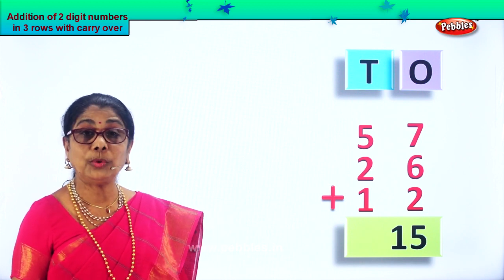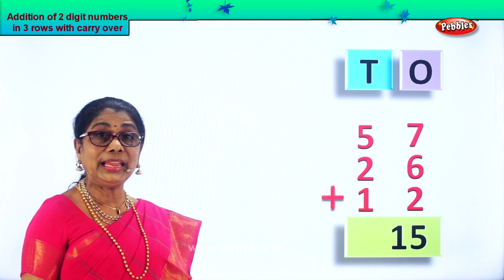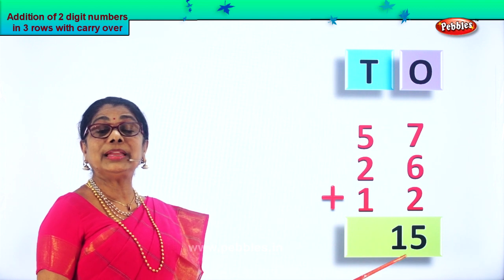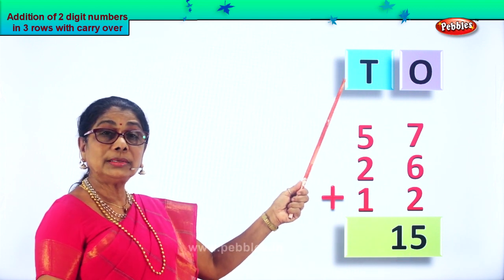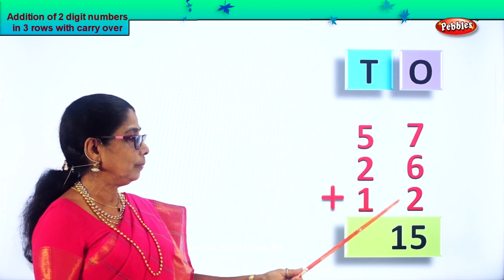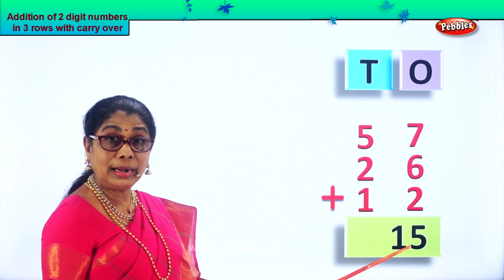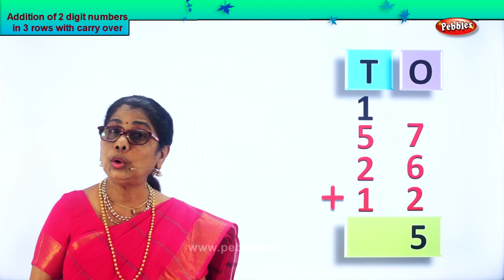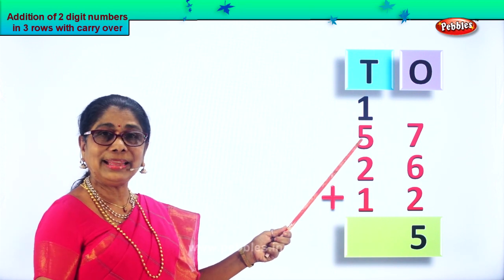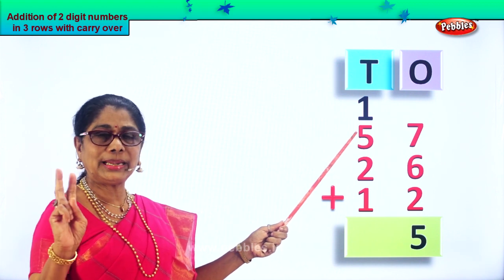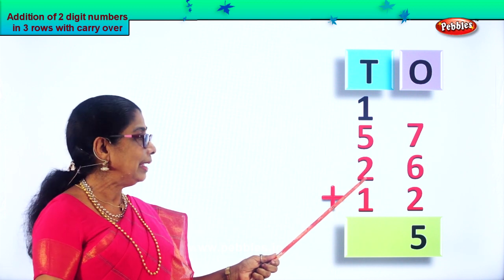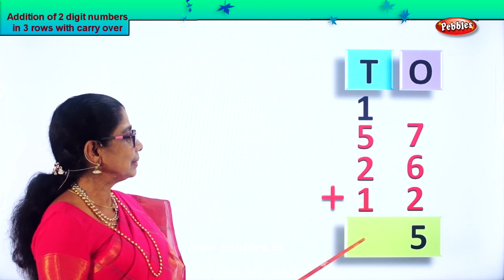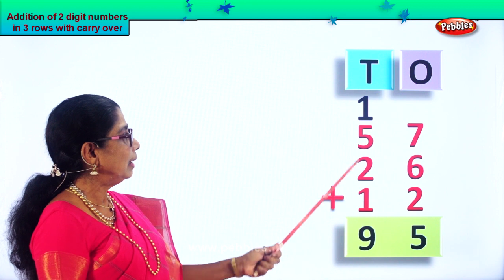That is one ten plus five ones — ten plus five equals fifteen. We leave the five ones here. We take ten ones to the tens place — it becomes one ten. We carry ten ones slowly and put them in the tens place. Now let's add all the tens: one ten plus five tens is six tens. Six tens plus two tens is eight tens. Eight tens plus one ten is nine tens.